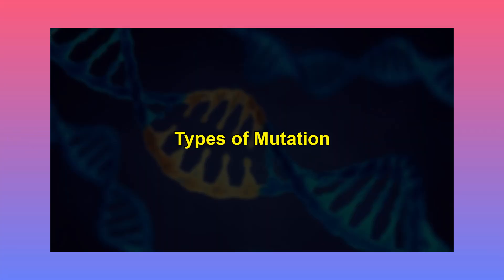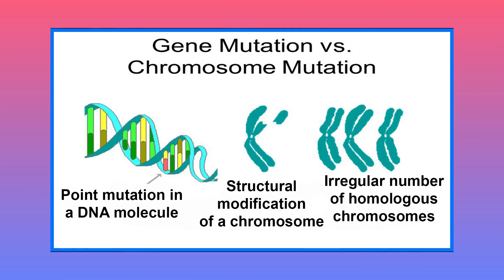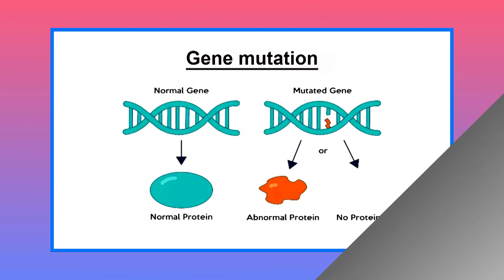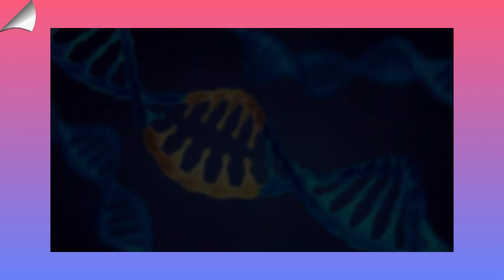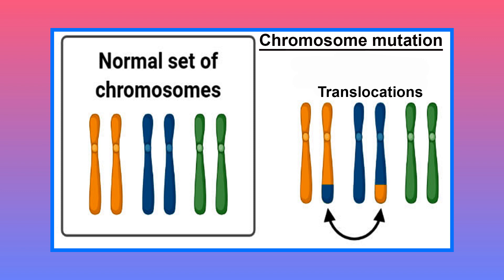Let's now discuss the types of mutation. Mutation is a process that produces a gene or chromosome that differs from the wild type. The mutation may result due to change either in the gene or the chromosome itself. Broadly, mutations may be gene mutations or chromosome mutations. Gene mutations are those that occur in the sequence of a gene and change its function. Chromosomal mutations are those where segments of chromosomes, whole chromosomes, or entire sets of chromosomes change.